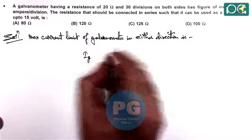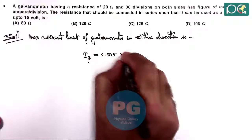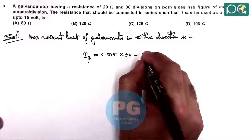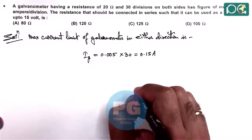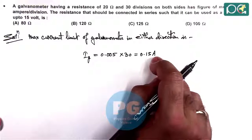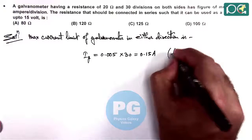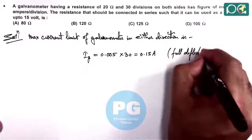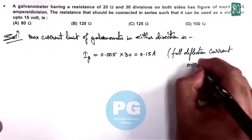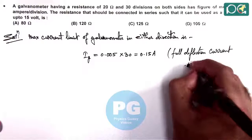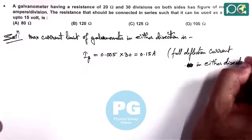So this gives us 0.15 ampere. So 0.15 ampere is the maximum current which can be passed through the galvanometer for full deflection. So this can also be written as full deflection current in either direction through this galvanometer.